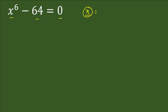We can rewrite x⁶ as (x²)³, so x⁶ minus 64 becomes (x²)³ minus 4³, since 64 equals 4 cubed. Now we have a difference of two cubes with a negative sign in between.